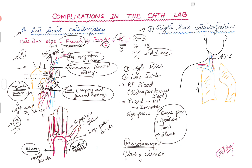An important potential complication of radial artery access is compartment syndrome. If there is significant bleeding into the forearm, it is a very compact space wrapped by fascia, and compartment syndrome can develop. It is very important to recognize this early.